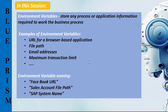Environment variables can be defined in the system manager tab. As shown on the screen, these are all examples of environment variables: a URL for browser-based replication, file path, global timeout, system or environment names, email addresses, a whitelist of email addresses, and the maximum number of transactions. These are the environment variables commonly used in Blue Prism.